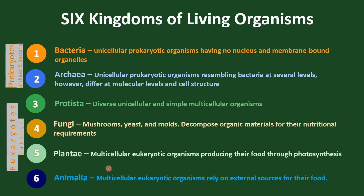Let us go through each kingdom's characteristics. First, Bacteria: this kingdom includes unicellular prokaryotic organisms. The absence of a nucleus and other membrane-bound organelles characterizes Bacteria. Second, Archaea: like Bacteria, Archaea are also unicellular prokaryotic organisms. However, they differ from Bacteria in terms of genetic makeup and specific aspects of cell structure. Archaea are often found in extreme environments like hot springs and deep seas.